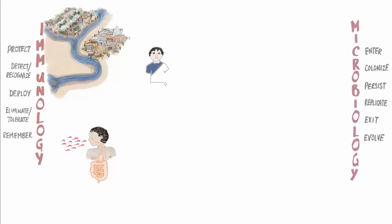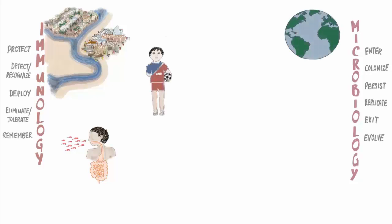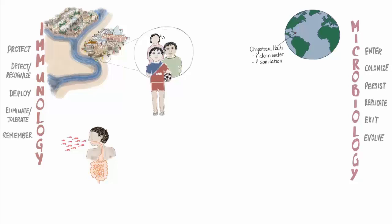Philippe is an eight-year-old boy living in Chapoteau, a village located on an isolated spit of land in Haiti. Since the earthquake that shook the region in 2010, clean drinking water and sanitation remain scarce. There are no sewers, and even latrines are rare. Philippe and his brother have already seen firsthand the health consequences of living without access to basic resources — their father passed away from dehydration due to diarrheal disease three years ago.